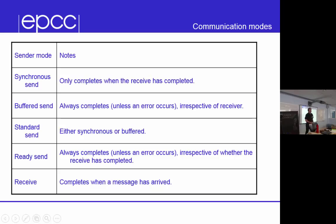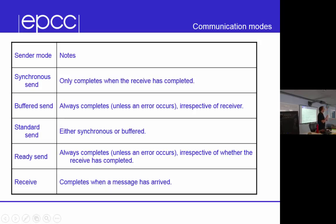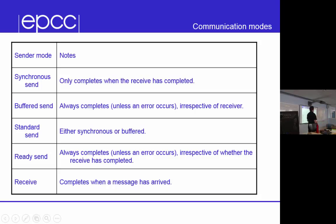If the system didn't take a copy of the data, you'd never know when you could overwrite it, because you'd never know when it's been received. That's why MPI calls asynchronous sends buffered sends — to make it clear there is buffering going on. Synchronous send is obviously synchronous. Buffered send is asynchronous and always completes because you just put the message in the post box.